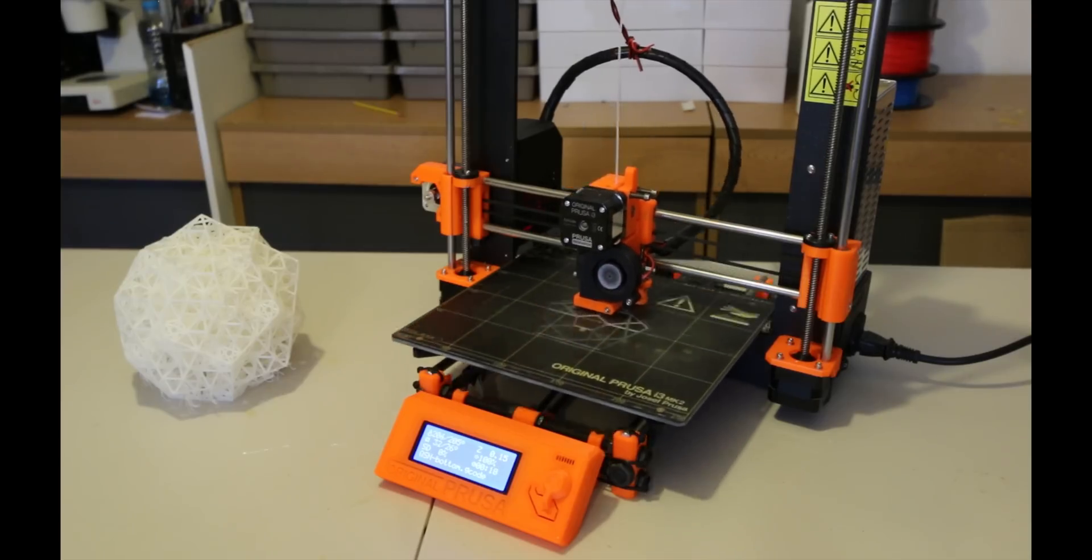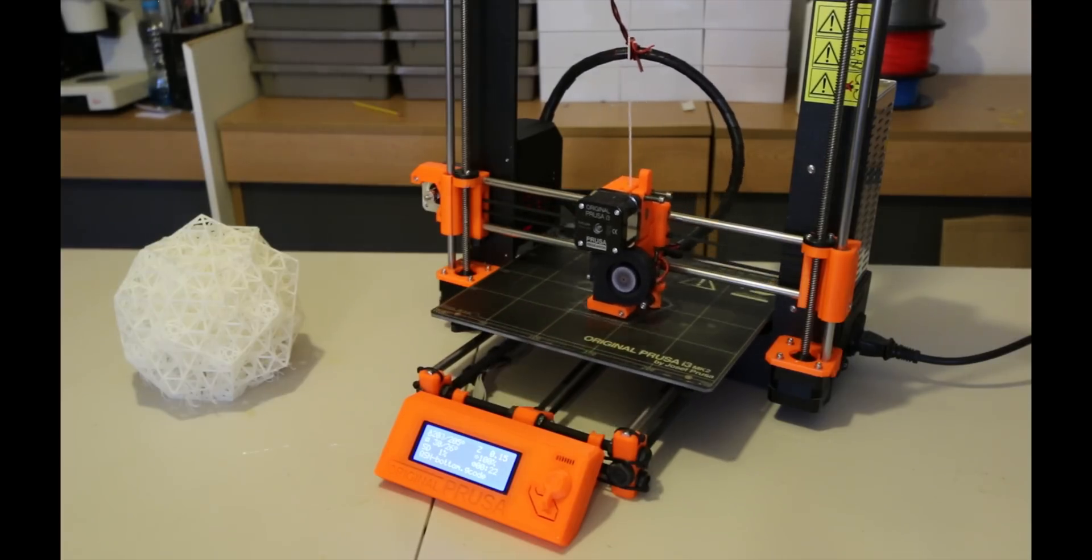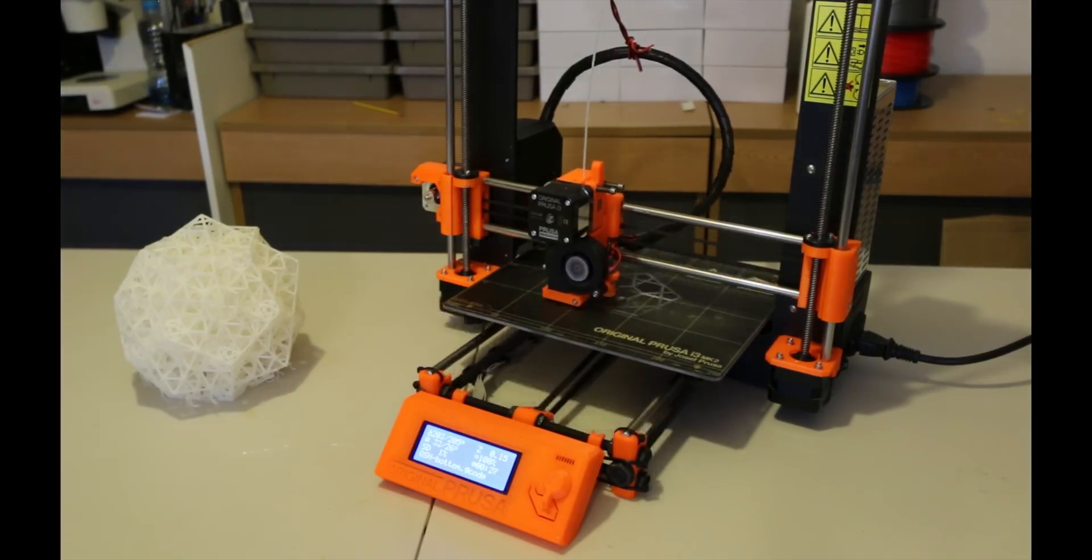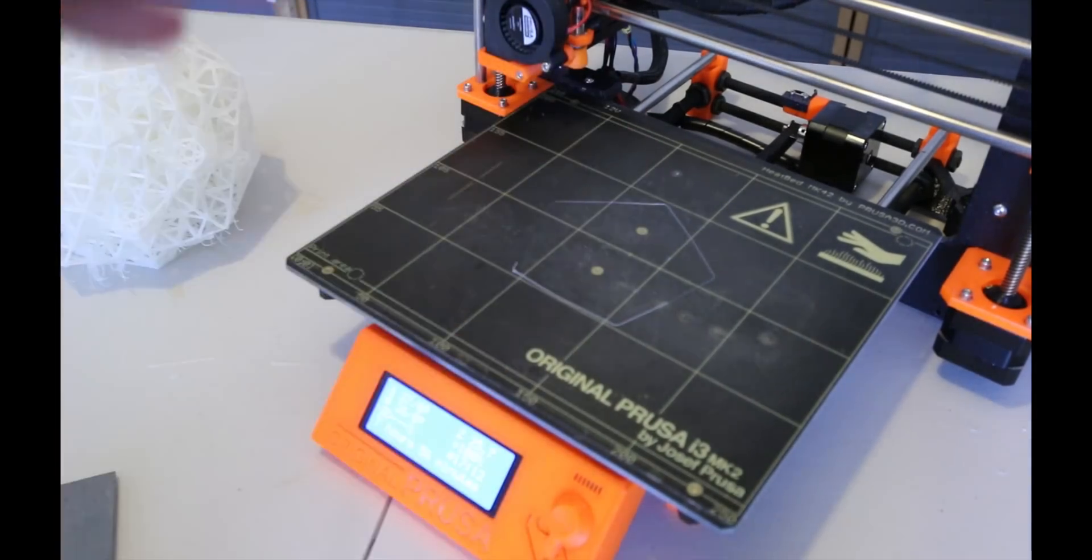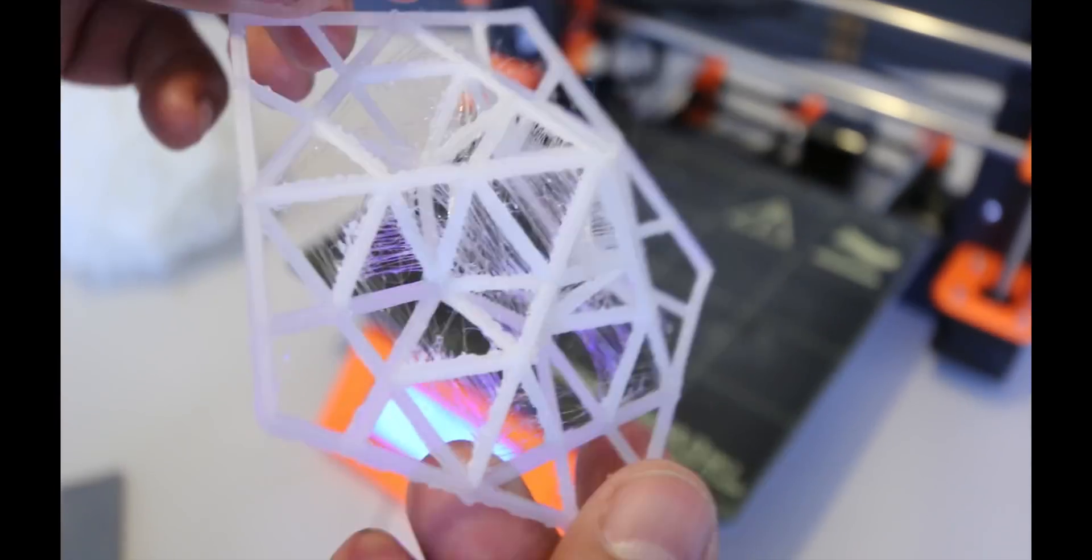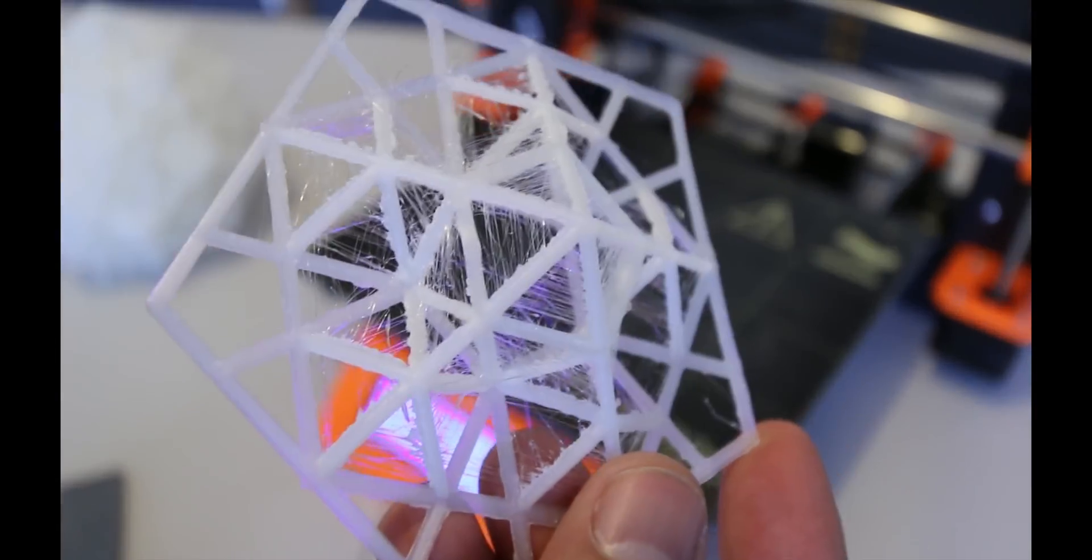The only thing to do now is to print out the bottom part so that we can glue it to the larger model and this had some weird results. There was a lot of strands and oozing coming out of that nozzle. I'm not sure why, it may be the fact that the heated bed was not heating up properly.